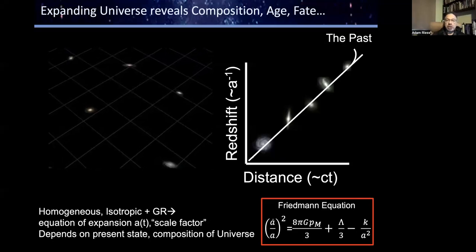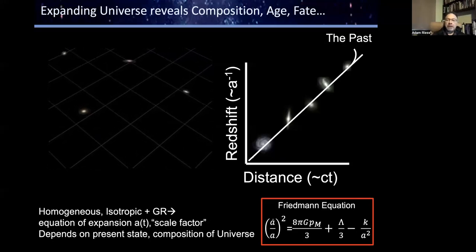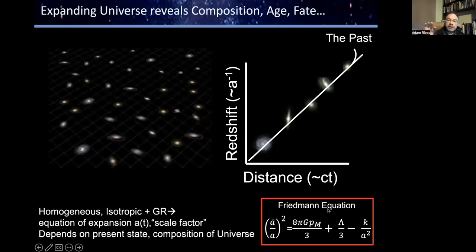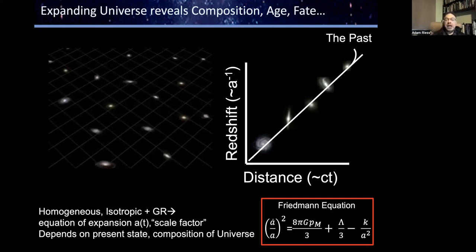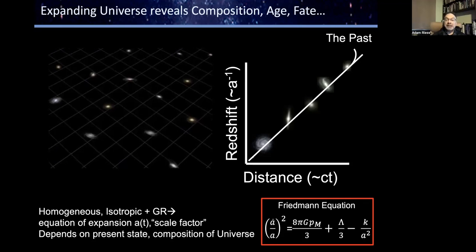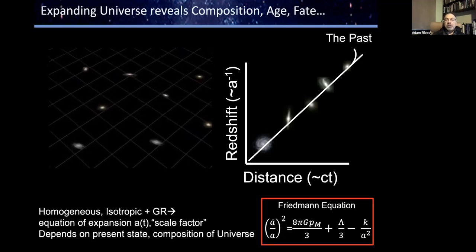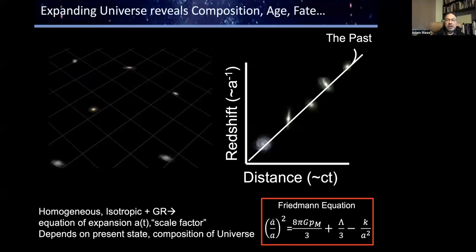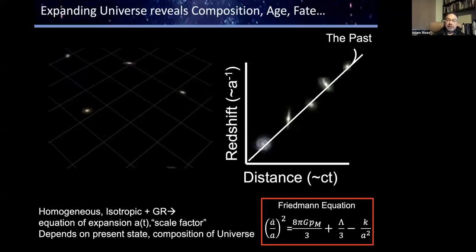The composition and physics of the universe is on the right-hand side of the Friedmann equation, and the kinematics is on the left-hand side. So this equation is sort of the F equals MA for the universe, where we want to learn about the composition.